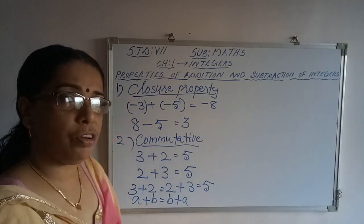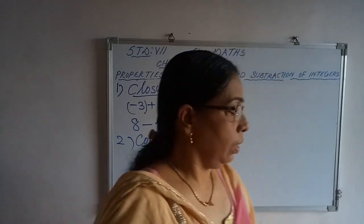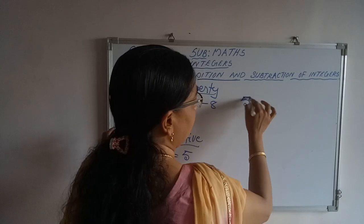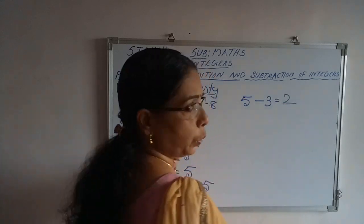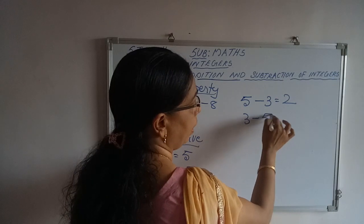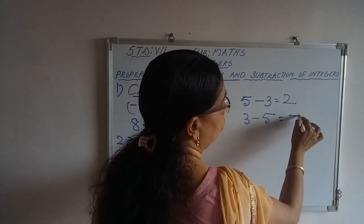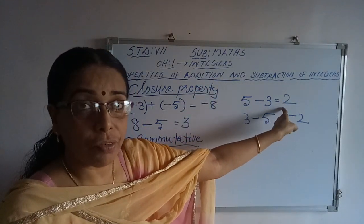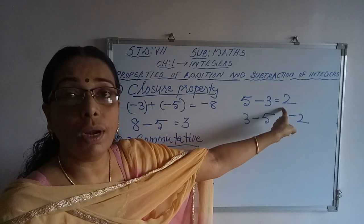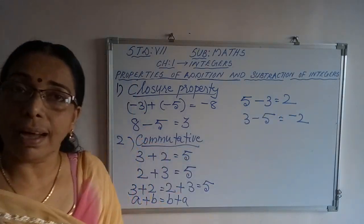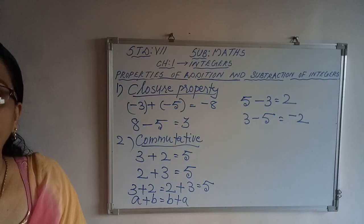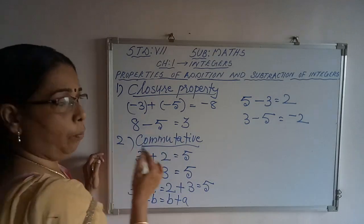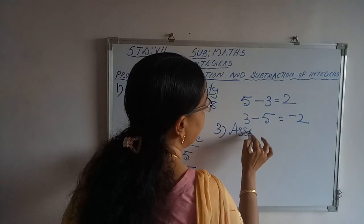In case of subtraction: 5 minus 3 equals 2, but 3 minus 5 gives minus 2. So in case of subtraction, the commutative property is not applicable. That means integers are not commutative under subtraction; they are commutative only under addition.